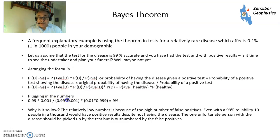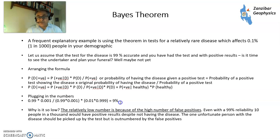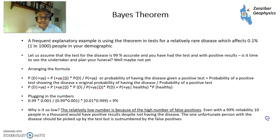Plugging in the numbers: 99% chance of test accuracy and 0.001 (1 in 1000) chance of having the disease gives you a chance of about nine percent. Nine percent is quite counterintuitive for a 99% accurate test. Even in a 99% accurate test, 10 people in a thousand would have false positives. The one person who actually has the disease should get picked up, but so should quite a few people who don't. So we need subsequent tests to check them out.